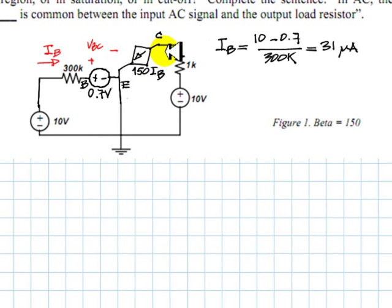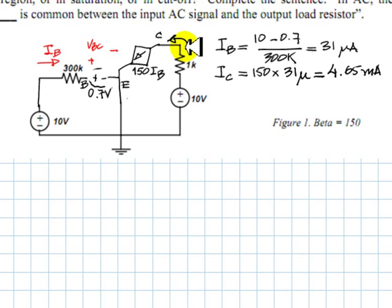Immediately, we compute the current in the collector, which is 150 times that, which is 4.65 milliamps. That is the current here in the collector. That current will produce a voltage drop in this 1 kilohm resistor,